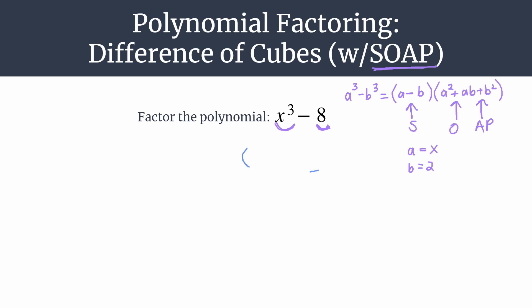So we have binomial and trinomial. We have a minus b, because we have the same sign there. We have a squared, so x squared, plus a times b. So we'll write that as 2x. And then always positive b squared. So 2 squared is 4. And this is how we factor x cubed minus 8.